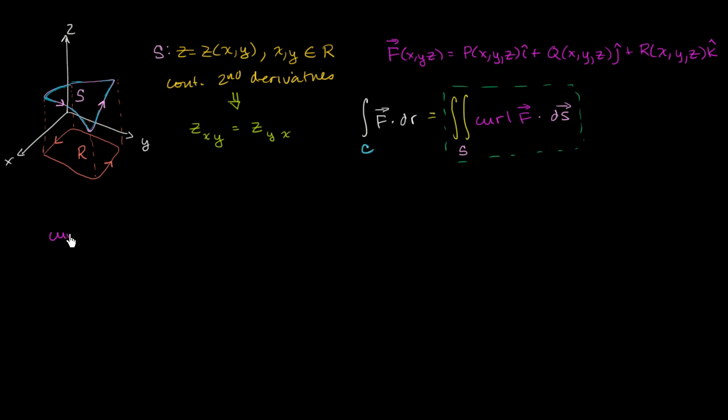So the curl of f is equal to, you could view it as the del operator crossed with our vector field f, which is equal to, you could write our components, so i, I'll do them in different colors, i, j, and k components. And then I need to write my del operator, or my partial operators, I guess I should call them. So it's a partial with respect to x, the partial with respect to y, partial with respect to z. And then I have to write the i, j, and k components, so by vector field f.